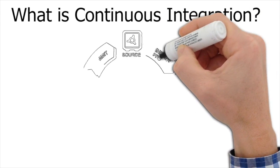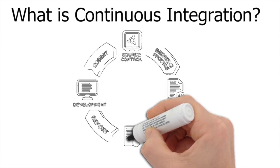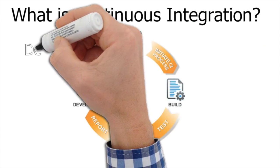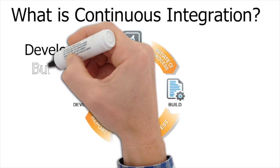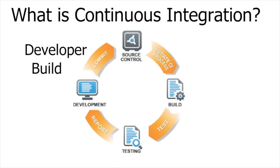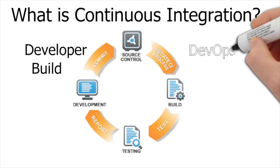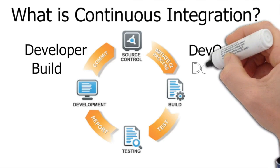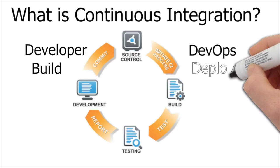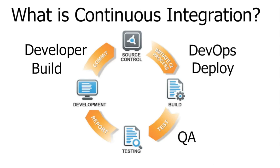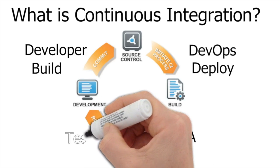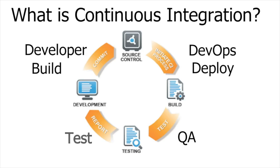Let's figure out the answers to these questions. Continuous integration is divided into three parts which are taken care of by developers, DevOps guys, and testers. Developers build, DevOps deploy, and quality analysis folks test. All of this keeps on happening in a continuous fashion.